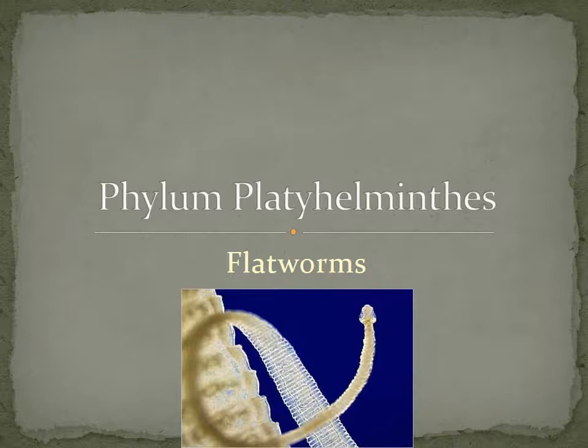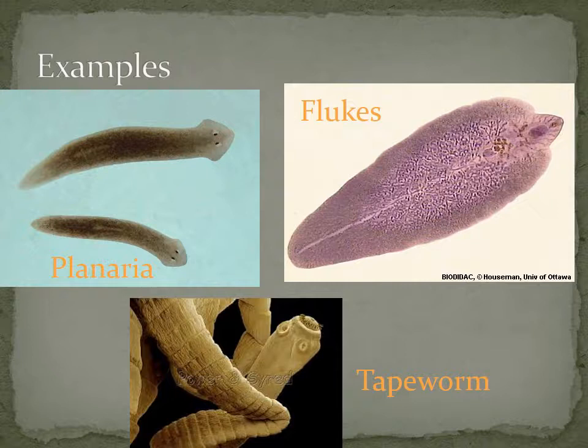This phylum is Platyhelminthes, and these are flatworms. To give you a sense of where we're going, the examples include planaria, flukes, and tapeworm. These are all forms of flatworms.